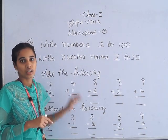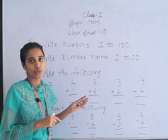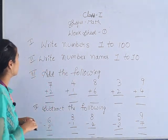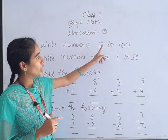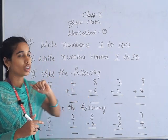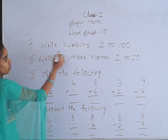You need to copy down all these questions in your book and do them at home. The first bit is about writing numbers one to hundred. In your book, you have to mention 'first bit' and write down this heading: 'Write numbers 1 to 100.'